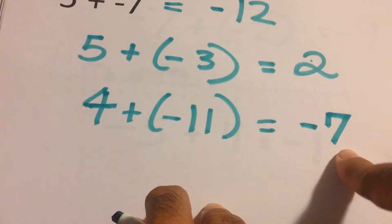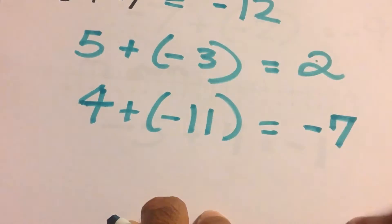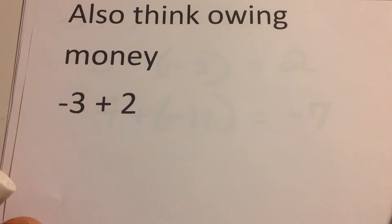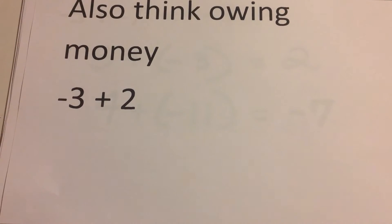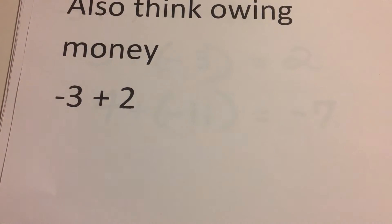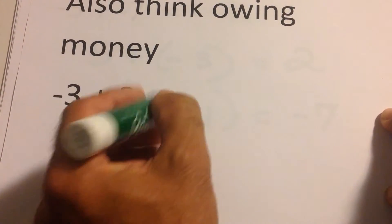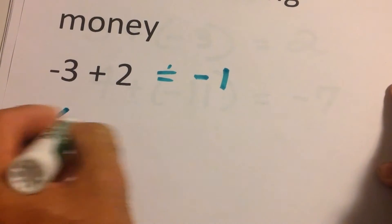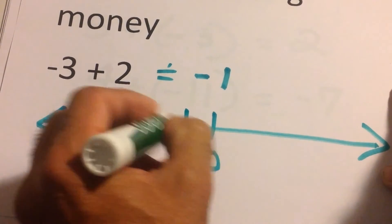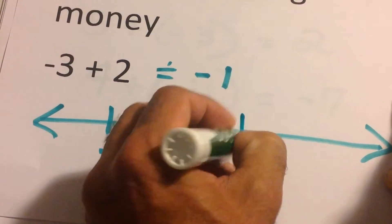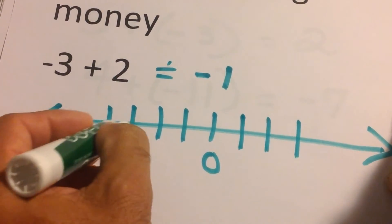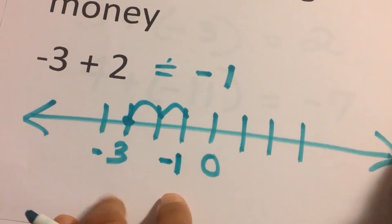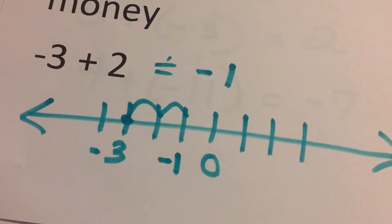Let's combine both methods. Negative three plus two: owing money — you owe three dollars but have two, so you still owe one dollar. On the number line, start at negative three, the two says go to the right — one, two — and there's negative one. Both methods give the same answer.